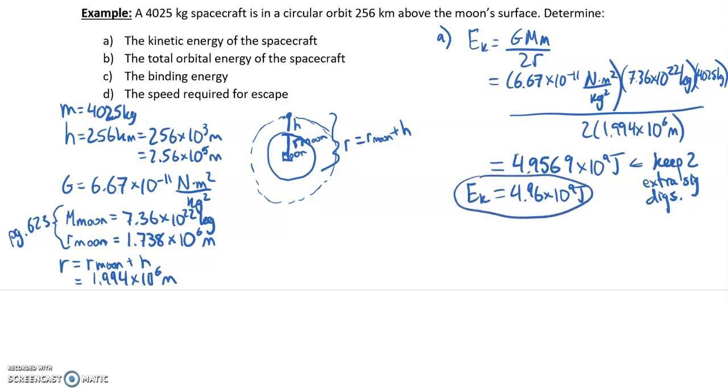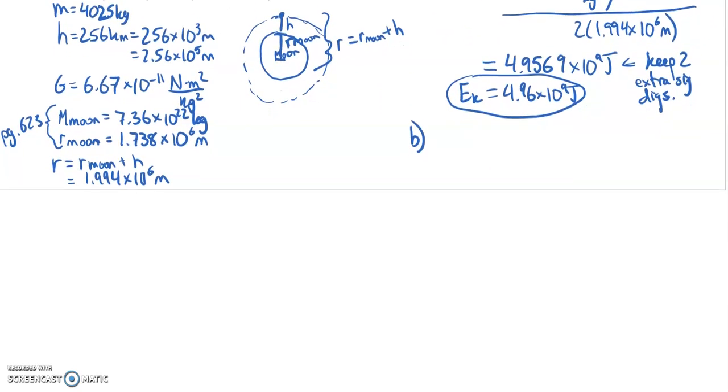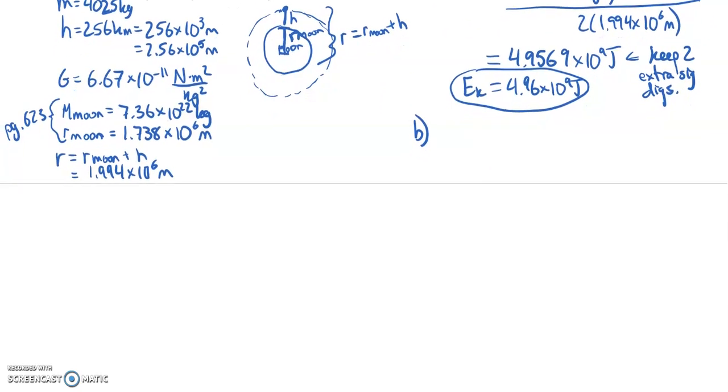Part B then says the total orbital energy of the spacecraft. The orbital energy of the spacecraft is the total energy. Total orbital energy is E_total. What is E_total? Well, we derive that above. We know that total energy is the negative of the kinetic energy. In other words, the total energy is negative 4.96 times 10 to the 9 joules. If you want a rationale for why that answer is what it is, go back to where we derived the total energy, and you'll see.